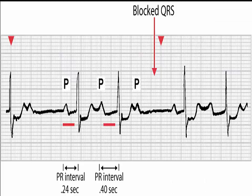Second degree heart block type 1, also called Mobitz I or Wenckebach. This is a disease of the electrical conduction system of the heart in which the PR interval has progressive prolongation until finally the atrial impulse is completely blocked and does not produce a QRS. Once the P wave is blocked and no QRS is generated, the cycle begins again with prolongation of the PR interval.